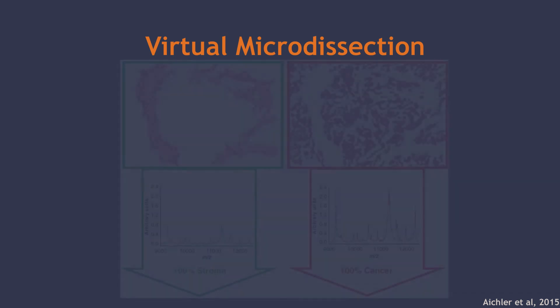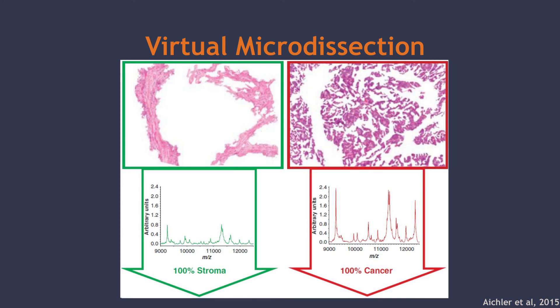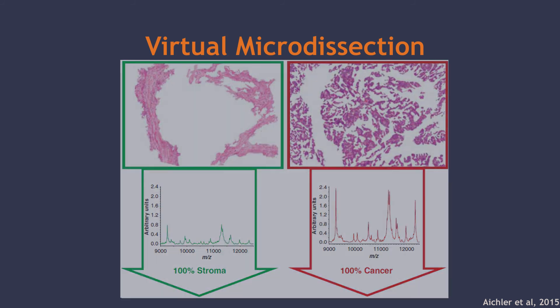Spot spectra with high expression of one of these two molecules were put into their respective group. The coordinates of these mass spectra were also recorded and extracted to form a stroma or cancer-only image.